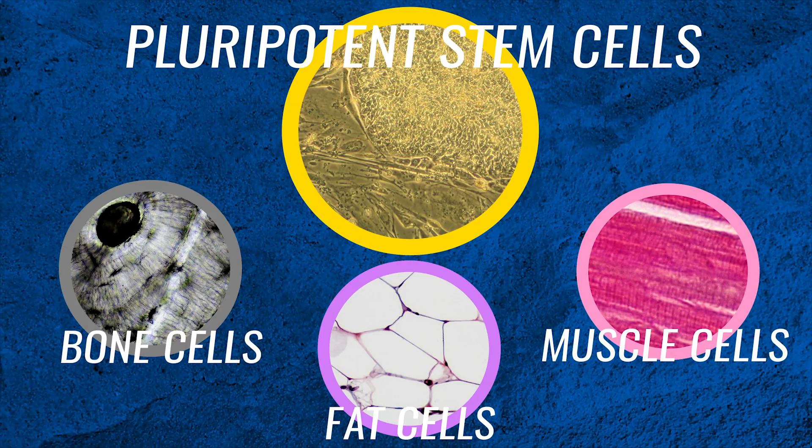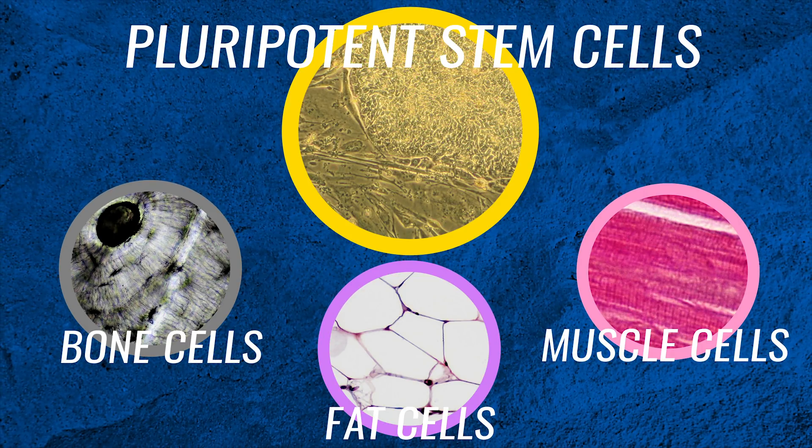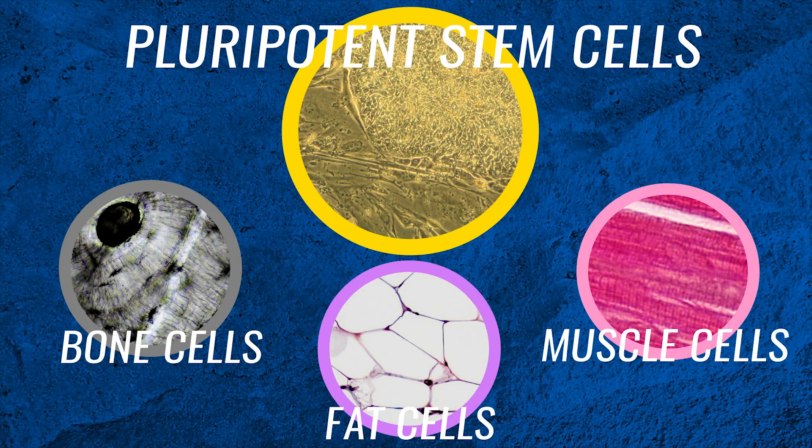The pluripotent stem cells have the capability to become many more cell types than just muscle cells. In fact, they can make all the cells in the body and they can divide unlimitedly, unlike the satellite cells.